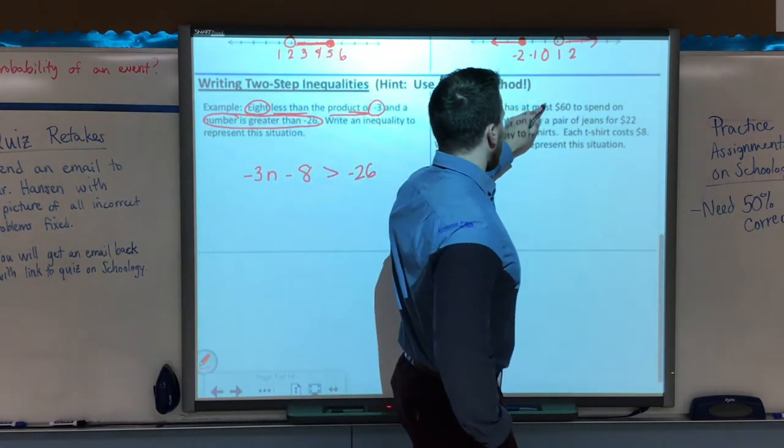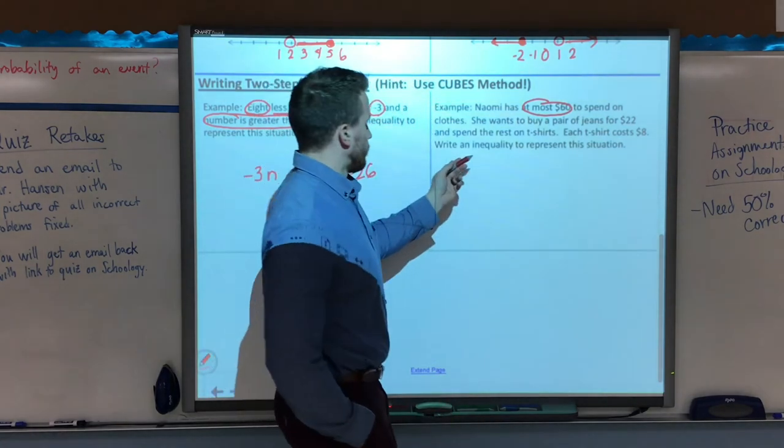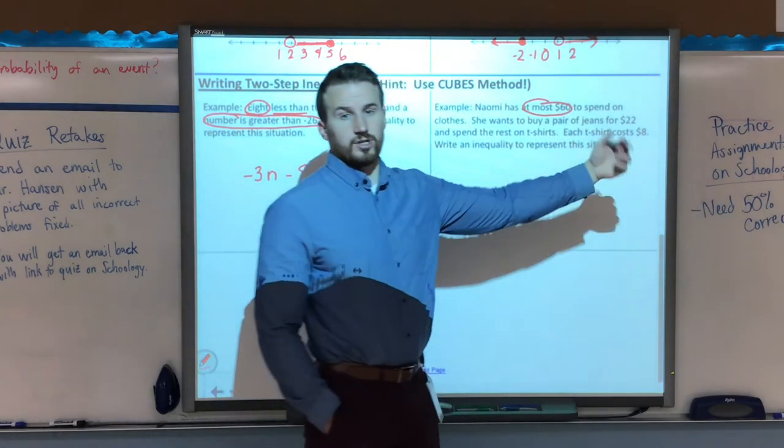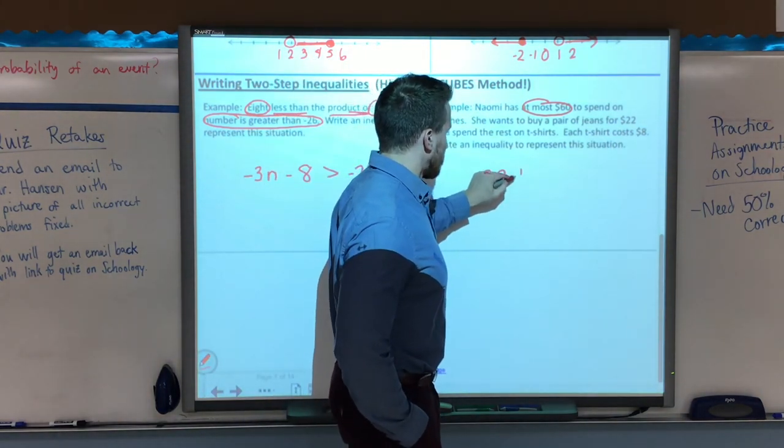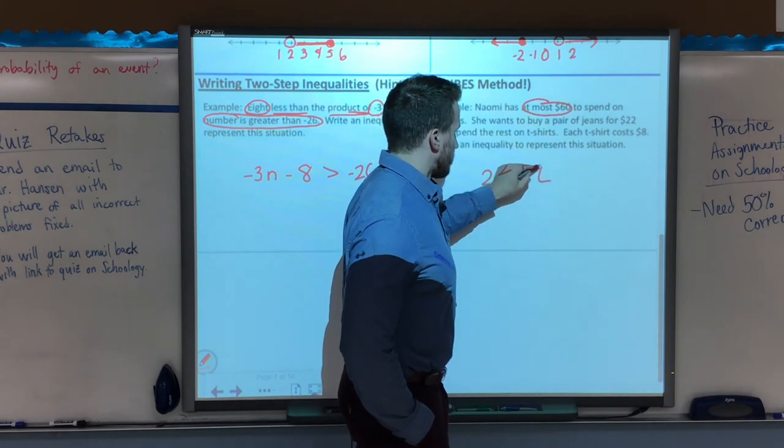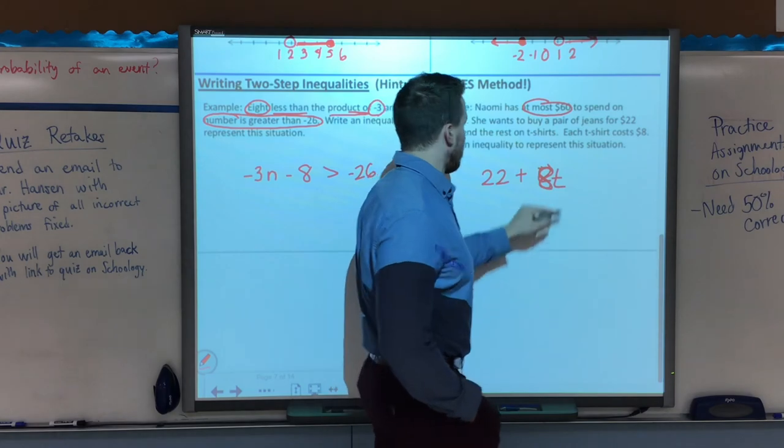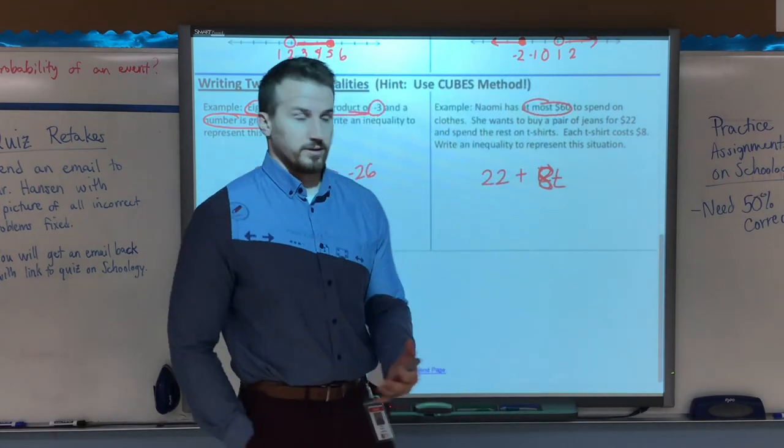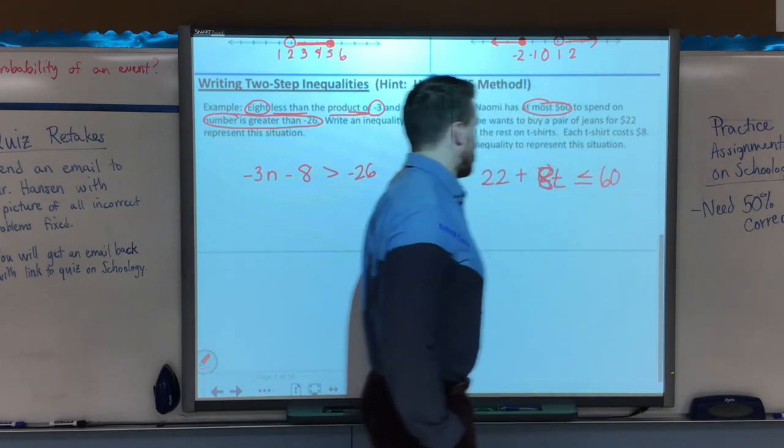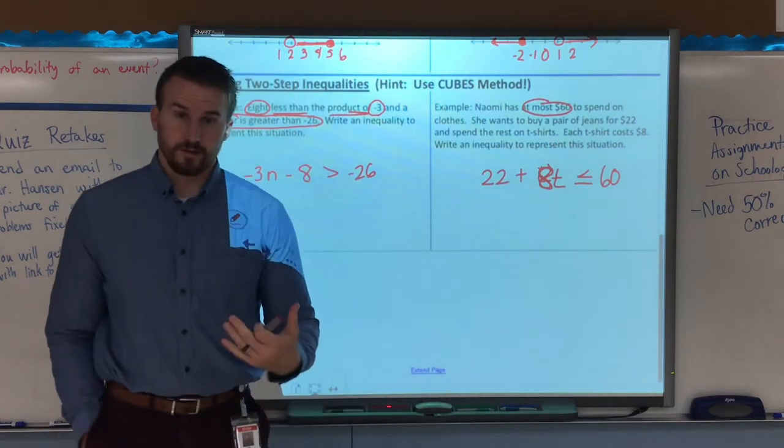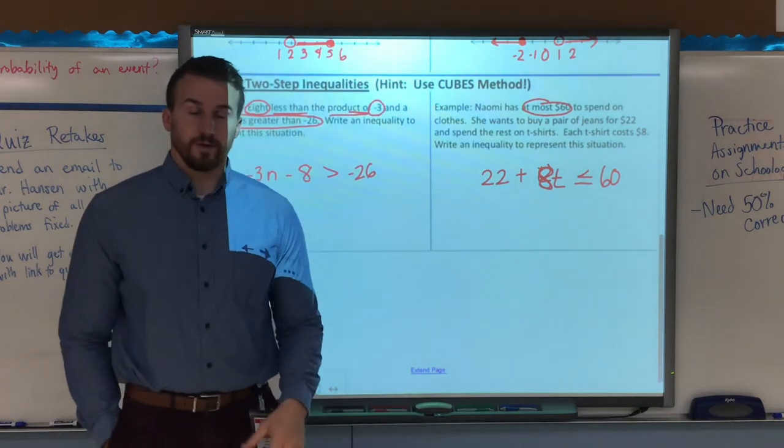Next example, Naomi has at most $60 to spend on clothes. She buys a pair of jeans for $22, and the rest on t-shirts. Each t-shirt costs $8. So, $22 in jeans and t-shirts, we'll call it T, so we have 8 times t, and at most means it can't be anything bigger than 60. So, it has to be less than or equal to 60. So, 22 plus 8 times t, the number of t-shirts she buys, less than or equal to 60. That's it for this video. We'll see you next time.